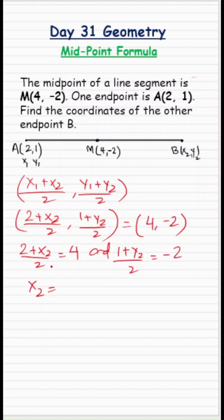So x2 comes out to be 2 times 4 is 8, 8 minus 2 is 6, and y2 is equal to 2 times -2 is -4, subtract 1 is -5.